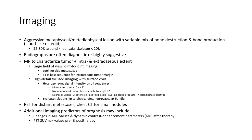Use large field-of-view imaging to capture the entire joint. Look for skip metastases. T1-based sequences define intraosseous tumor margin. High-detail focused imaging with surface coil is recommended. Head CT for distant metastases and chest CT for small pulmonary nodules. Additional imaging predictors may include change in ADC value, dynamic contrast enhancement parameters, and SUV value before and after therapy.